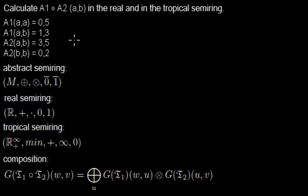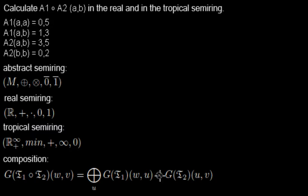In this case, our alphabet contains A and B. The things you could get out of A1 with input A are A or B, so those are the values we use for U, and we want to sum over them.